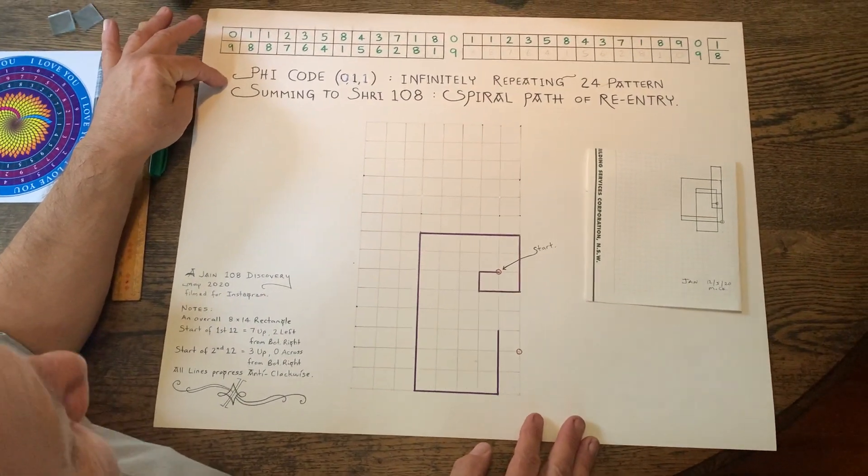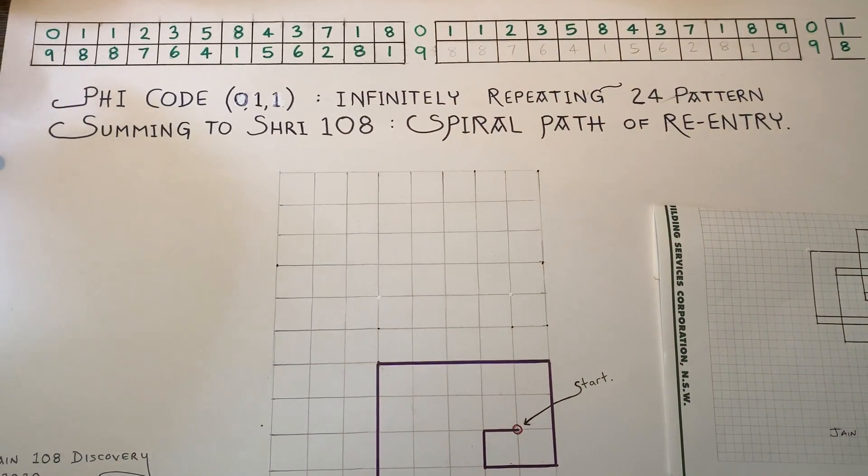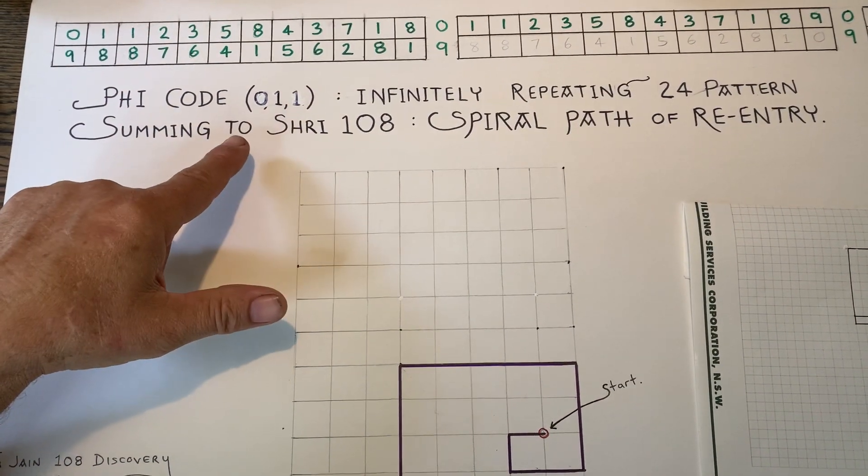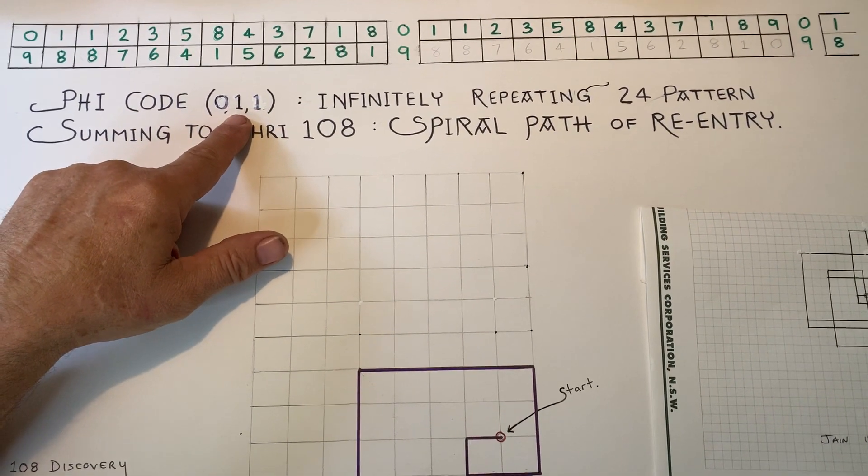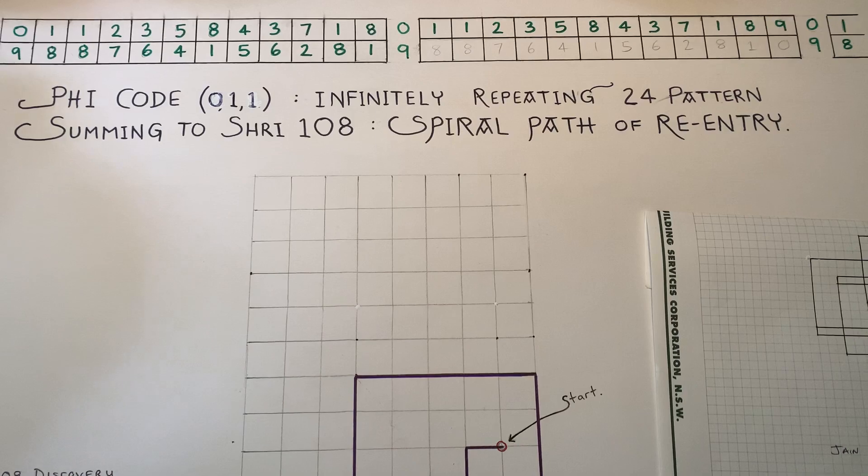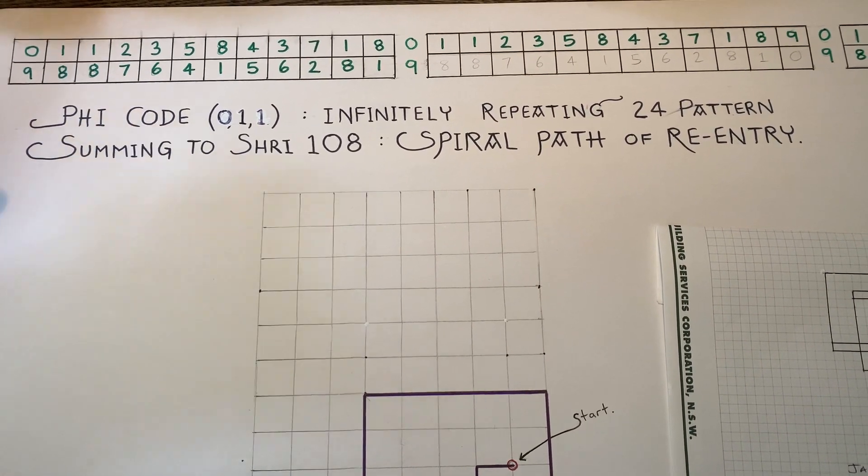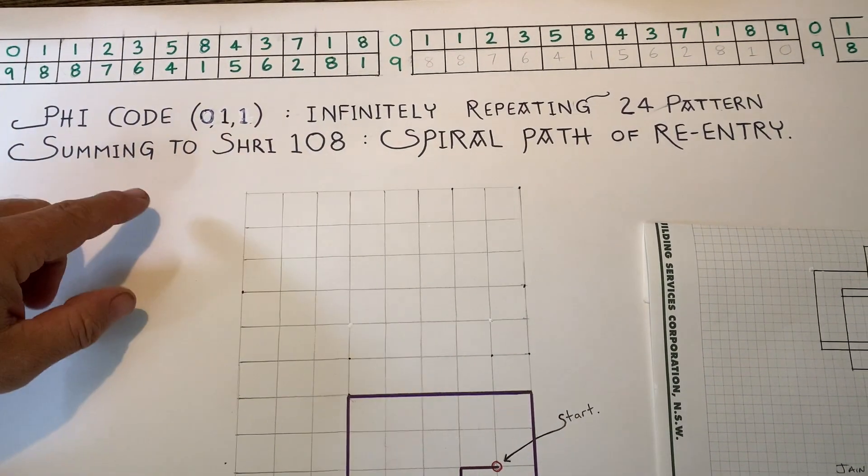Another Jane 108 discovery. I'm excited to release a graphical version of the 108 code. So this is called Phi Code 011, because we're going to start from zero this time and not one. And it's called the infinitely repeating 24 pattern, which obviously sums to the Shri or Holy 108. And what I'm going to show is a spiral path of re-entry.